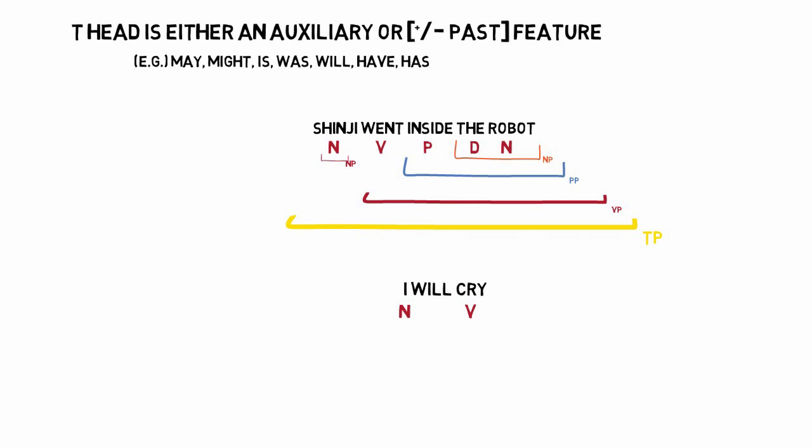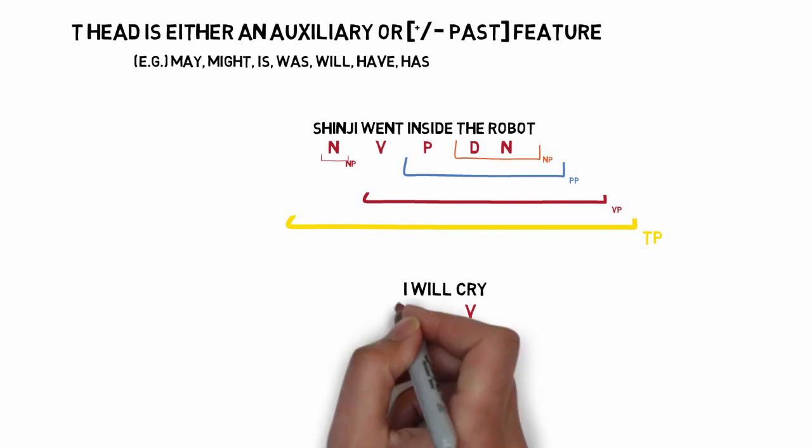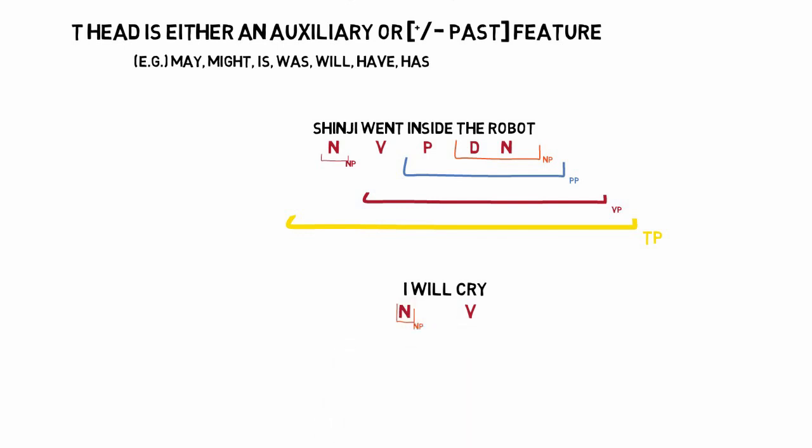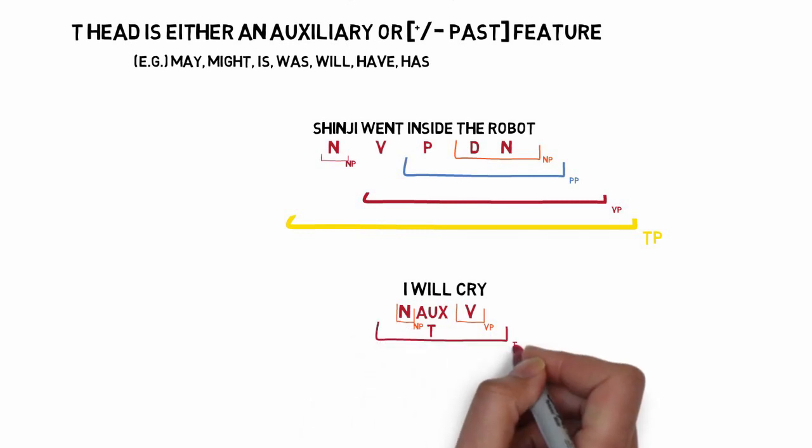We're not saying that I will, will crying. We are saying that I cry and 'will' is just telling us that it is in the future. So in this case, our tense phrase rule would tell us that our sentence looks like 'I' is the NP, 'will' is the T head, and 'cry' is the VP. All together, that is a TP.